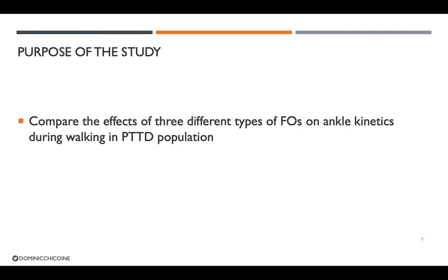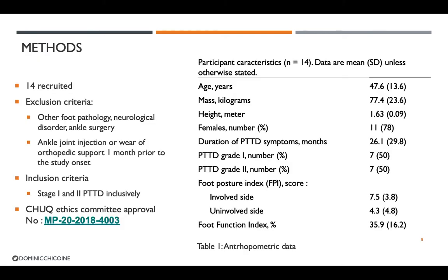To do so, we recruited 14 individuals. Our exclusion criteria were to have no other foot pathology, neurological disorders, or ankle surgery, and one month prior to the study onset, no ankle joint injection or use of orthopedic support. Our inclusion criteria was to be affected by stage 1 or 2 PTTD inclusively. We recruited an equal number of stage 1 and 2 PTTD — seven of each.